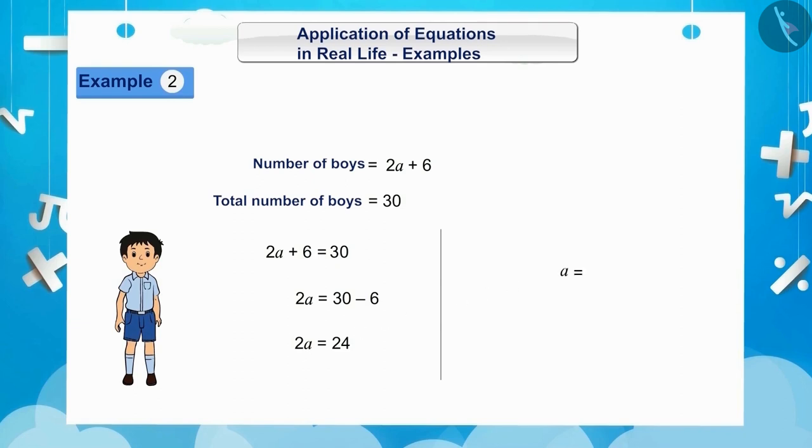Where we get 2A is equal to 24. To find the value of A, we will divide 24 by 2 in the RHS. Our new LHS will be A, our new RHS will be 24 by 2. That is, A is equal to 12. Therefore, the total number of girls in the class will be 12.